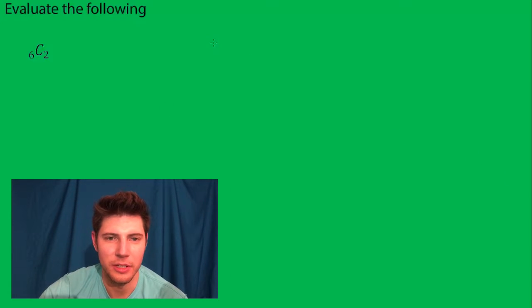The formula for this is going to be if it's NCR it's just going to be N factorial over N minus R factorial times R factorial.